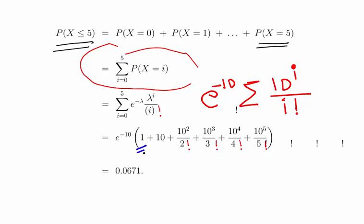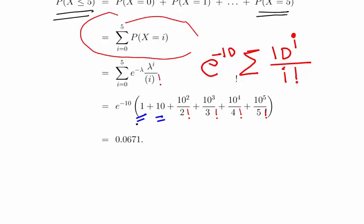When i equals 0, 10 to the power of 0 is 1, 0 factorial is 1, giving us 1. When i equals 1, 10 to the power of 1 is 10, 1 factorial is 1. We work it out: 10 squared over 2 factorial plus 10 cubed over 3 factorial plus 10 to the power 4 over 4 factorial plus 10 to the power of 5 over 5 factorial.